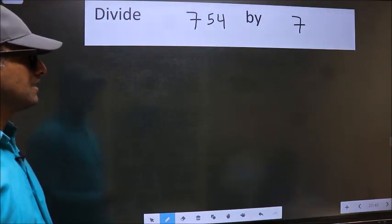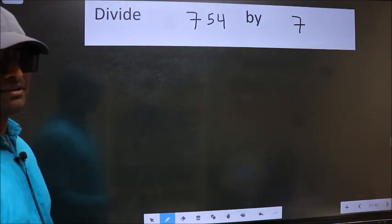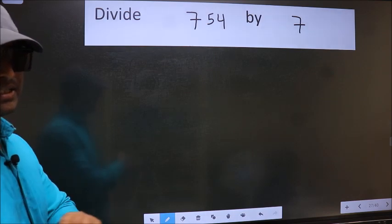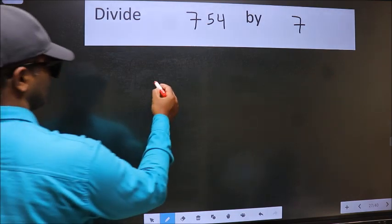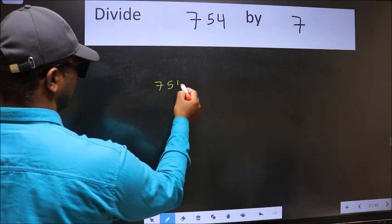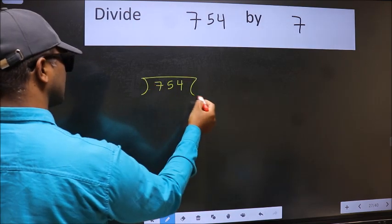Divide 754 by 7. To do this division, we should frame it in this way: 754 here and 7 here.